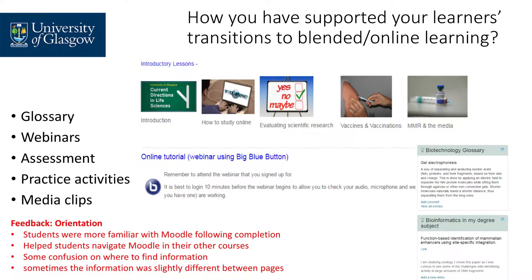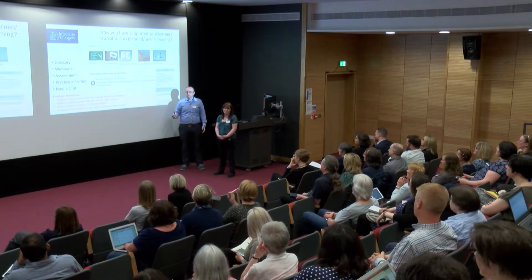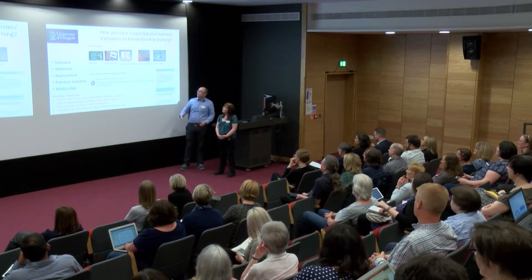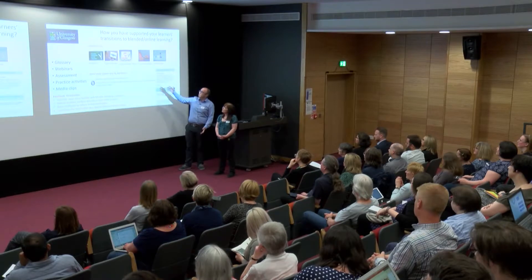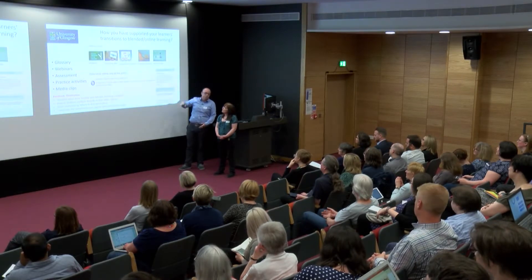One question we were asked to address was how we supported the learner's transition. As well as the orientation, we had good media production values — the media unit helped with autocues and videos introducing the blocks, selling the topic and explaining why we picked it, why we focused on areas with current research calls. We were trying to showcase that we didn't just pick four random topics; there was a reason and rationale. We also had 'how to study online' resources to highlight differences from campus-based learning.